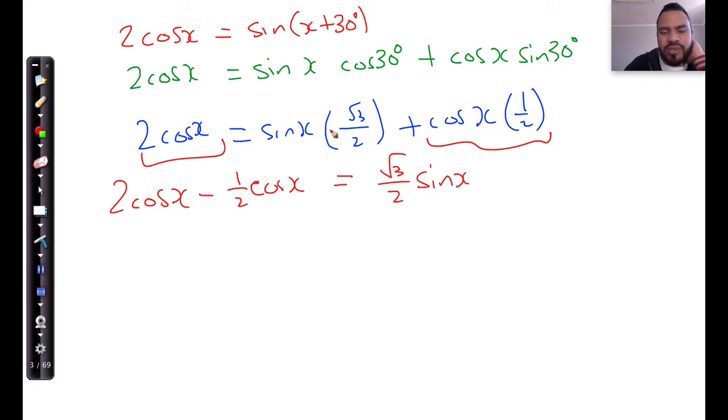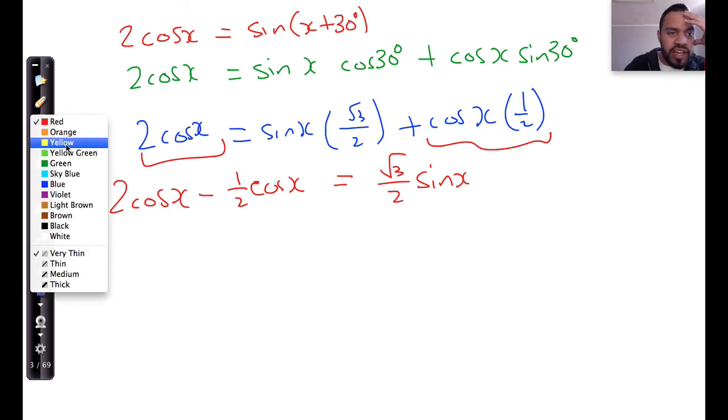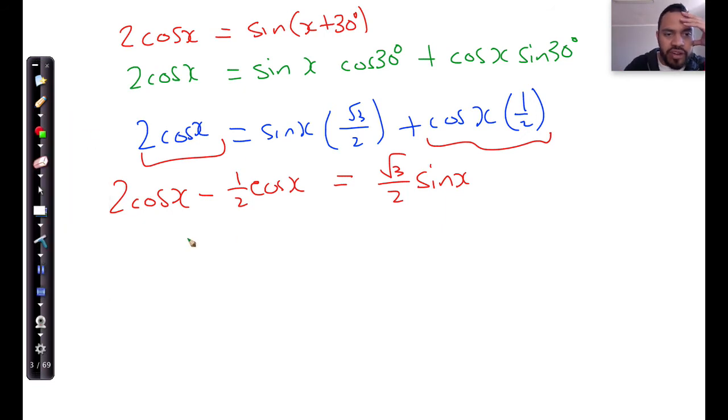I've just switched this around in terms of the order. Two times three is exactly the same as three times two. So, two cos x minus a half cos x, it's like saying two cows minus a half a cow. That's going to give you one and a half cows remaining. And as you know, one and a half cows is three over two cos x, and that's what we have over there is equal to root 3 over 2 sine x.